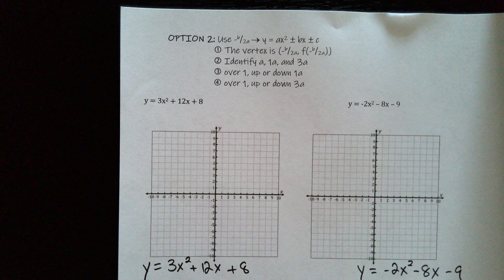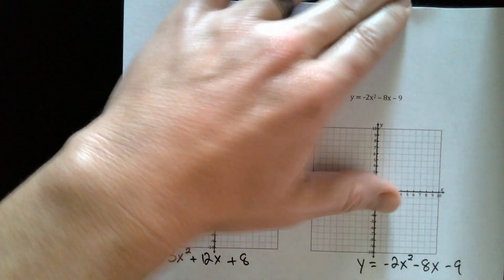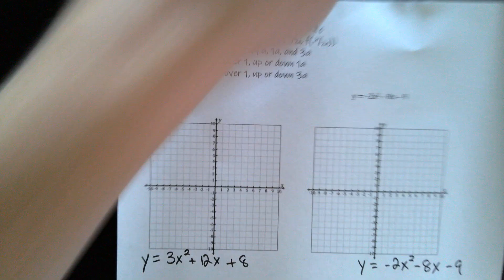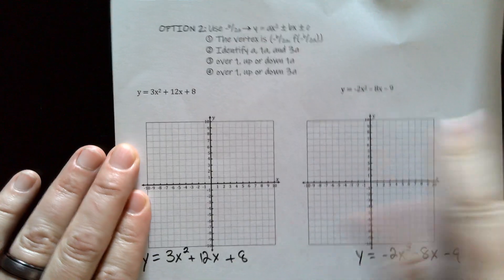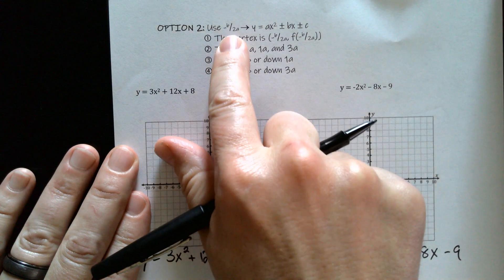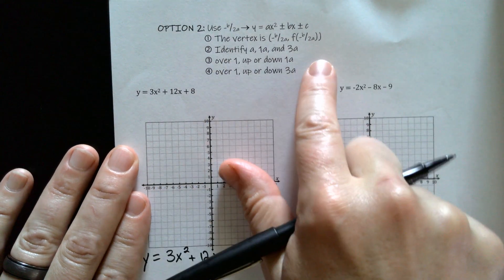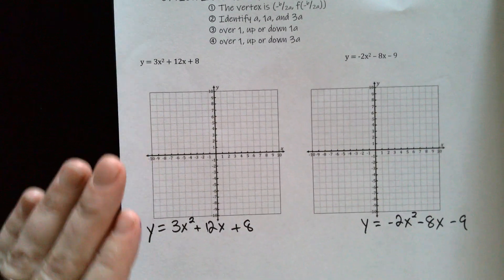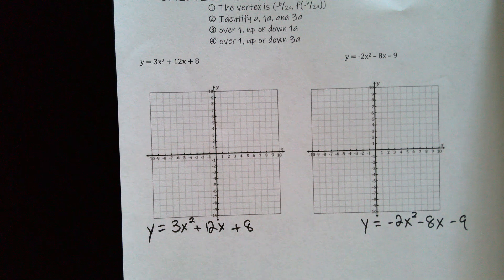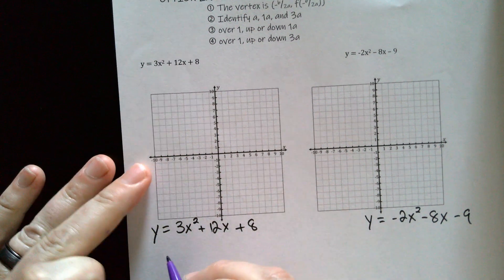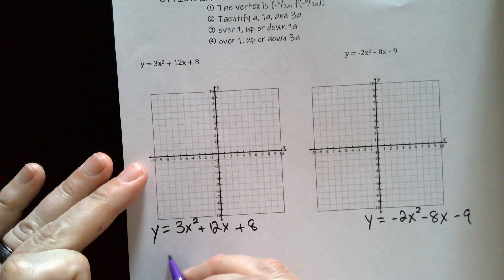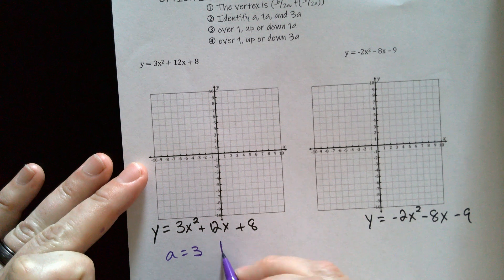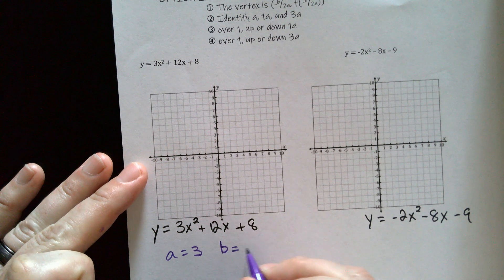The second method is going to be a lot quicker, especially when you have that a out front. We're going to use negative b over two a, and then f of negative b over two a, which we covered a little bit last video. Let's go down to this one. We've got our a is equal to three and our b is equal to 12.